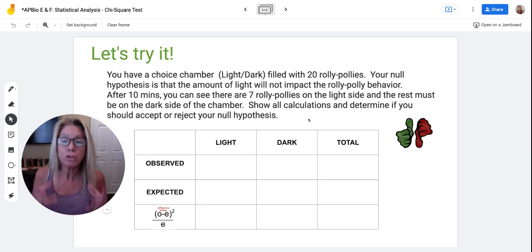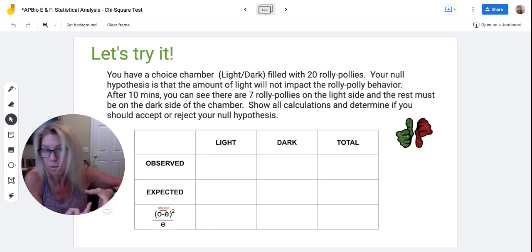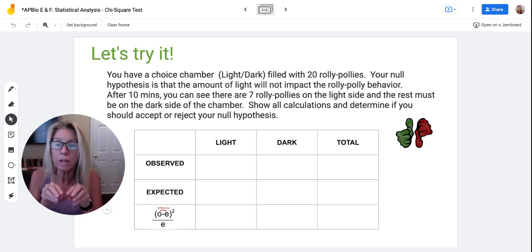So let's try it. You have a choice chamber. This is a lab we do in my biology classes. It's like a petri dish and there's two options. You put some organism in there and you see if they go to one side or the other. Let's say you put 20 roly-polies in your choice chamber. Your null hypothesis is that there is no connection between your variable in this case...